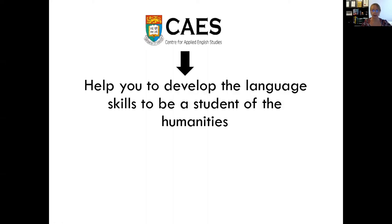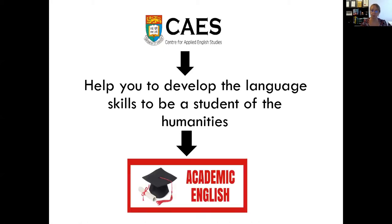At CAES, our mission is to help you to develop the language skills to be a student of the humanities, and this means developing your academic English skills. So what this means is you need to develop strategies in your time at Hong Kong U for developing your critical reading, writing, speaking, and listening skills.